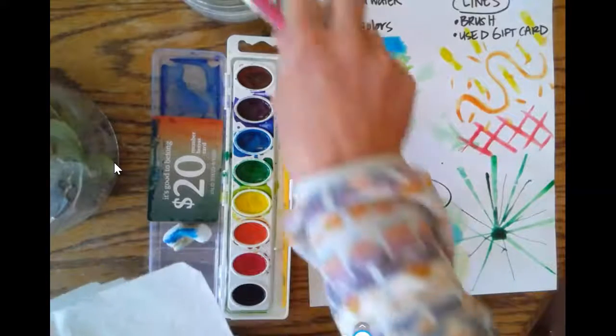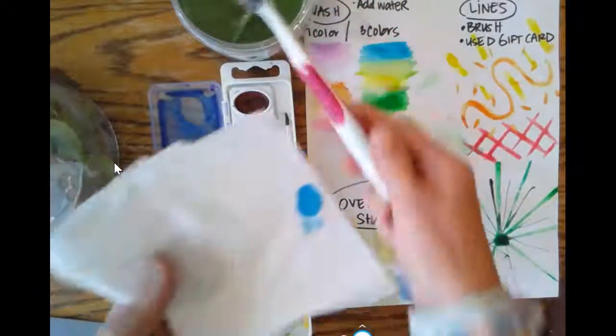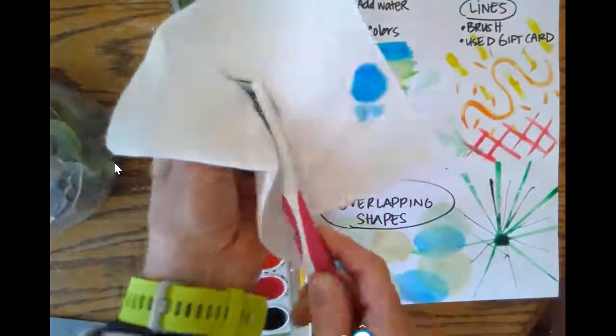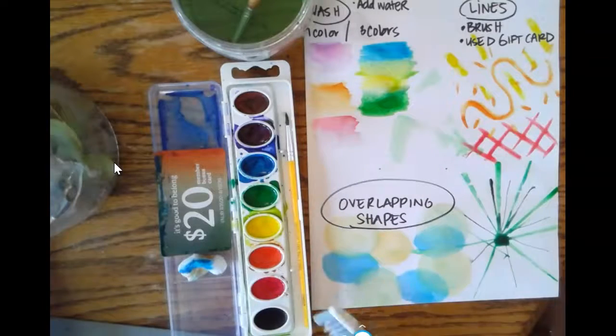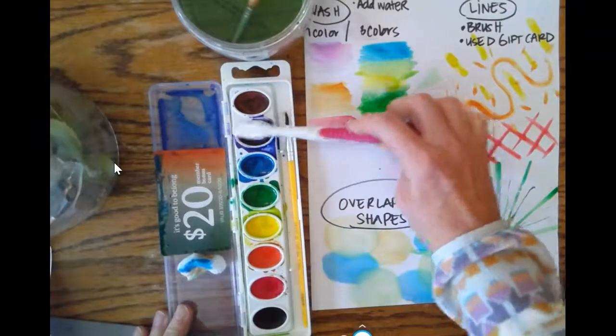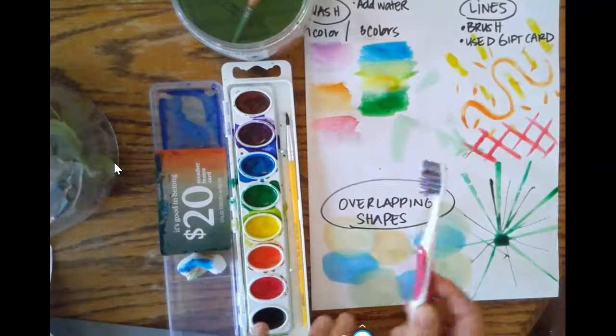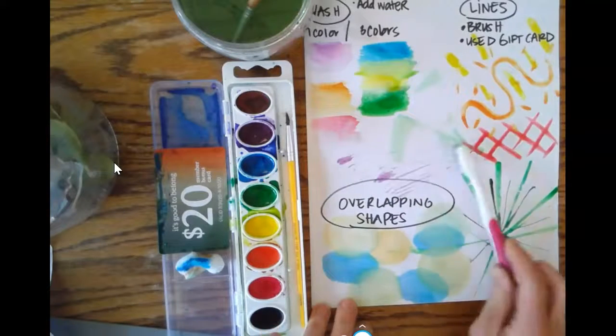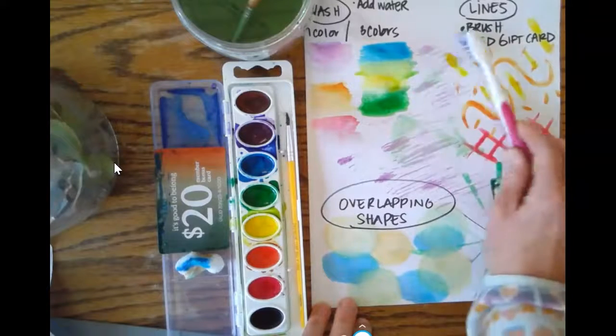Another option is a toothbrush. I dip the toothbrush in my water bucket, dry it off on my paper towel. You can dip that brush right into your paint. So you can see I have some purple paint on the bristles of the brush, and then use that to create some interesting textures and lines.